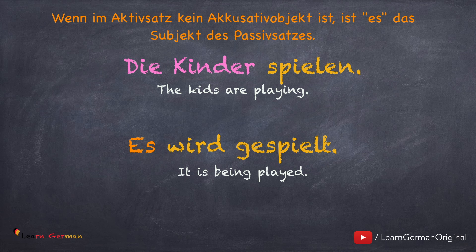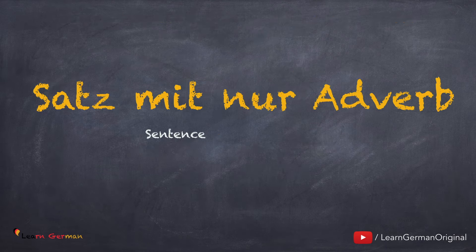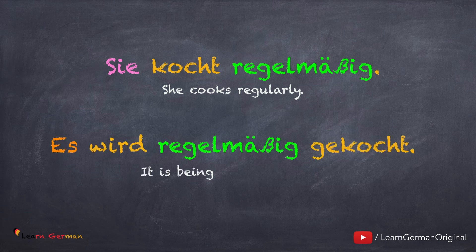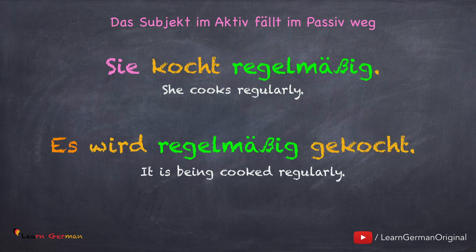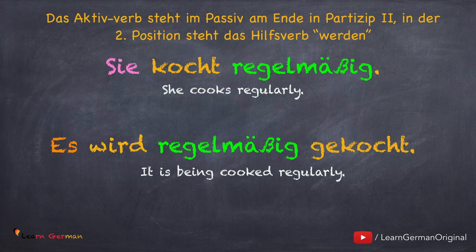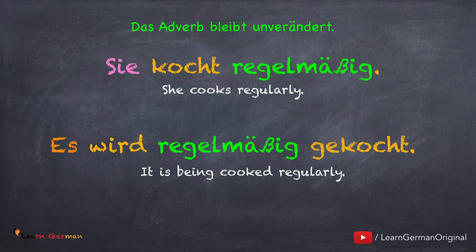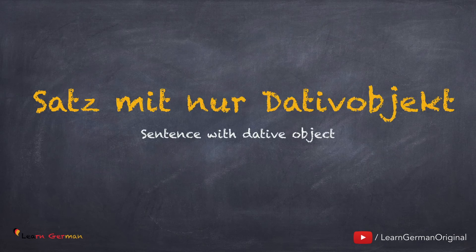A sentence with no accusative object in the active voice will take the subject es in the passive voice. Jetzt schauen wir uns einen Satz mit nur Adverb an. Sie kocht regelmäßig. Hier fällt sie weg. Es wird regelmäßig gekocht. Das Verb steht am Ende in Partizip 2, und weil es hier kein Akkusativobjekt gibt, ist in dem Passivsatz das Subjekt es. Das Adverb bleibt unverändert.